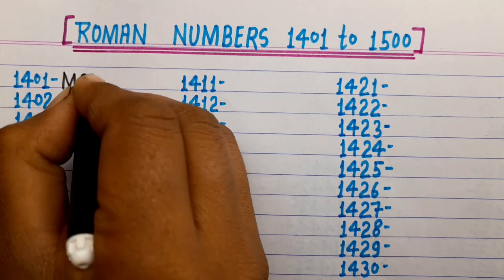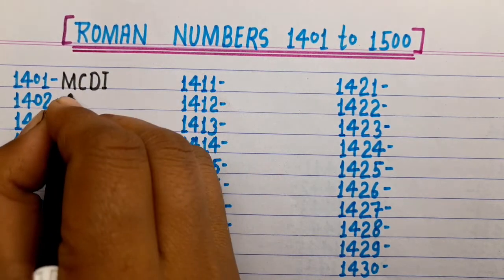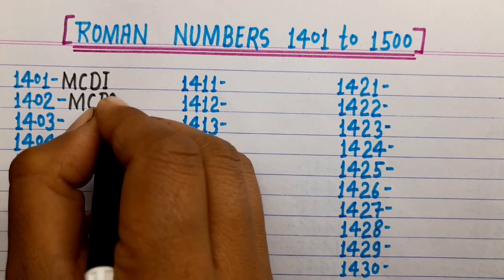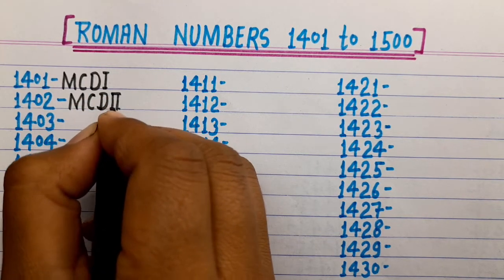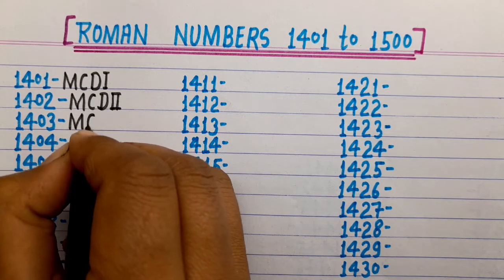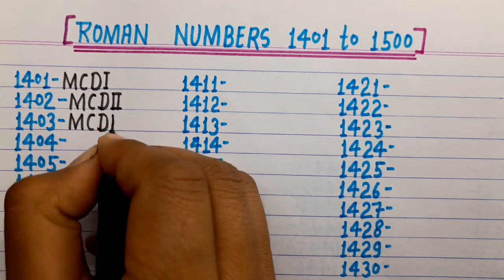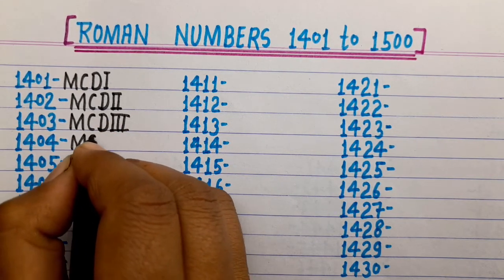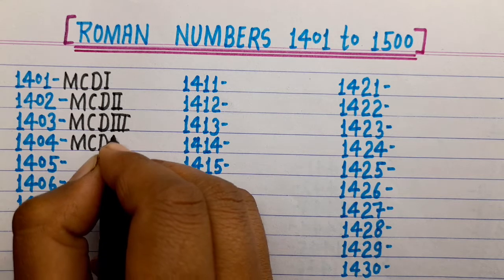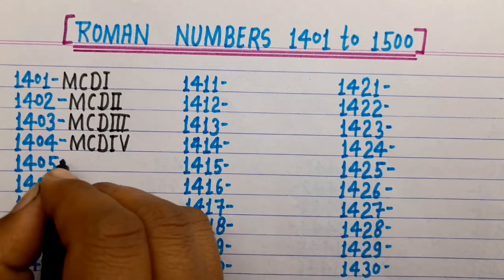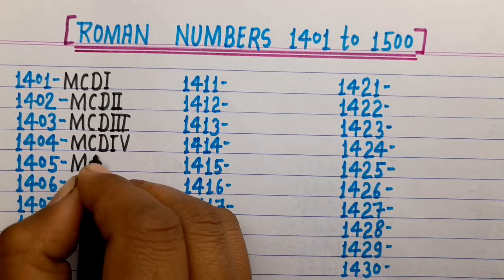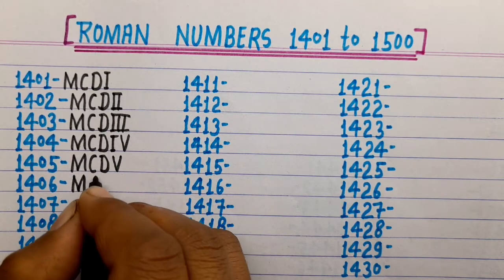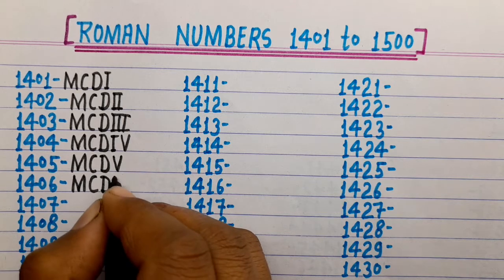1401 is MCDI. 1402 is MCDII. 1403 is MCDIII. 1404 is MCDIV. 1405 is MCDV. 1406 is MCDVI.